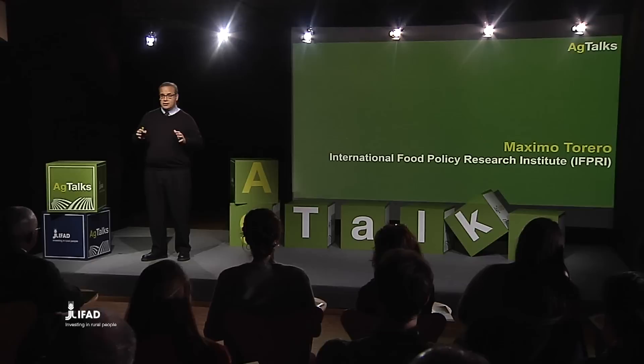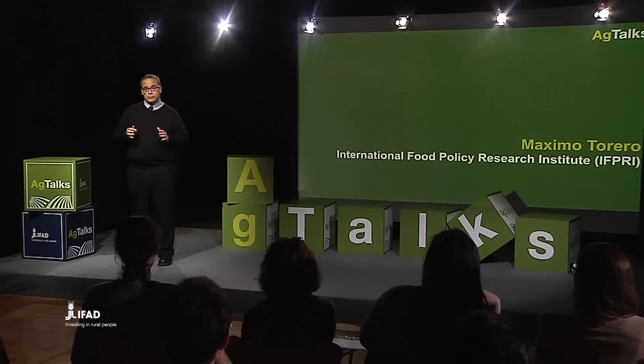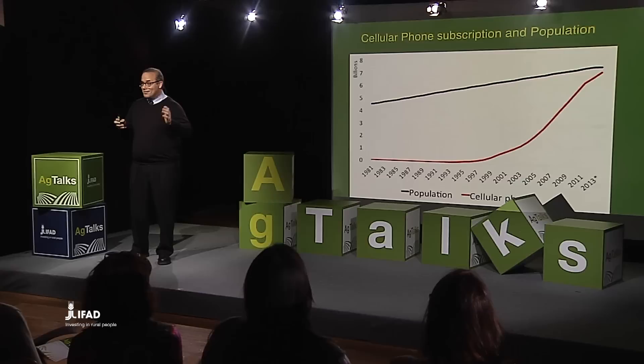Let's go 15 years ago. 15 years ago, there were 480 million cellular phones and around 6 billion people. Today, we have 6.6 billion cellular phones and 7 billion people. As you can see in the graph, the red line — which is the amount of cellular phones — is getting close to the population. By today, in 2013, the number of cellular phones may exceed the number of people in the world.